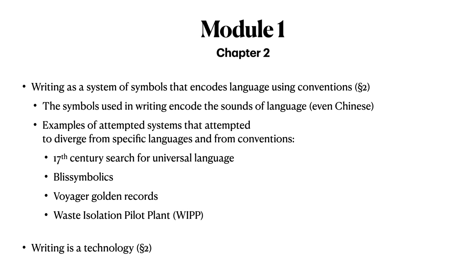Let's now continue with a look at the content we will cover in Chapter 2 of Language, Technology, and Society. Chapter 2 presents two important concepts. The first is that writing is a system of symbols that encodes language using conventions to represent the sounds of language. The second is that writing is a technology.